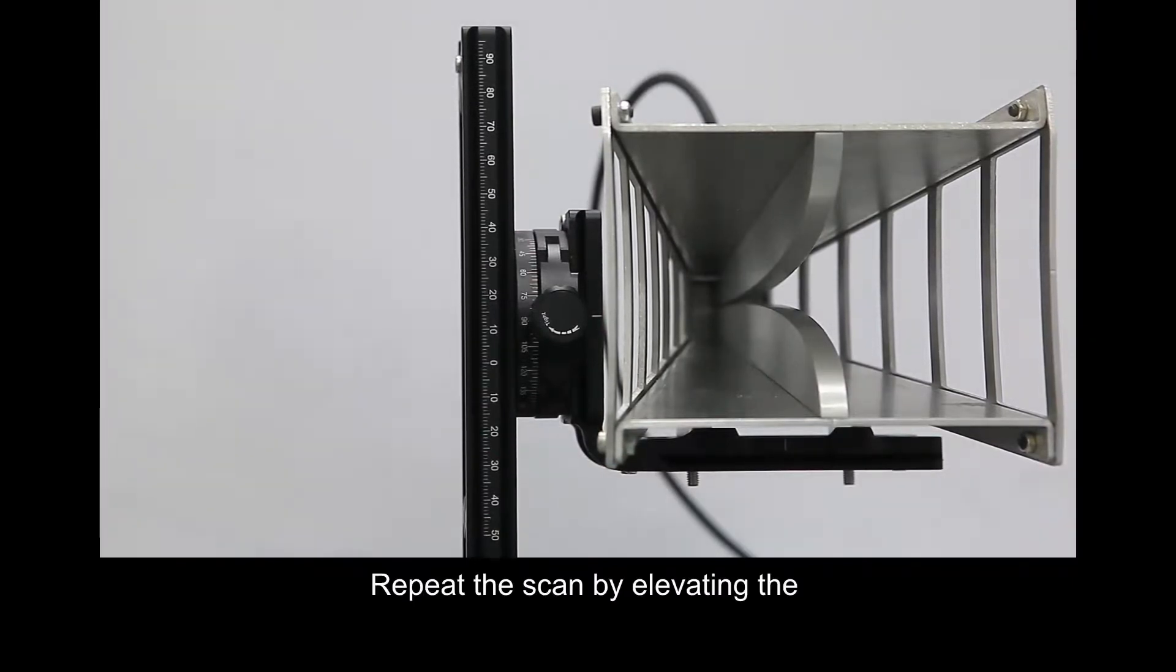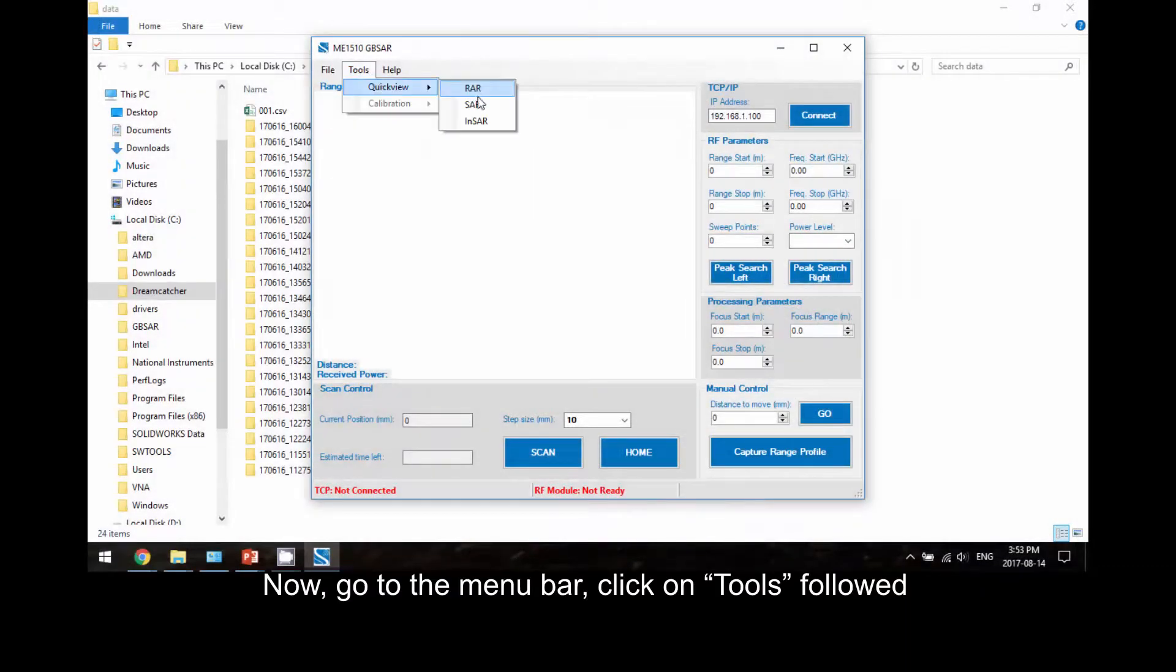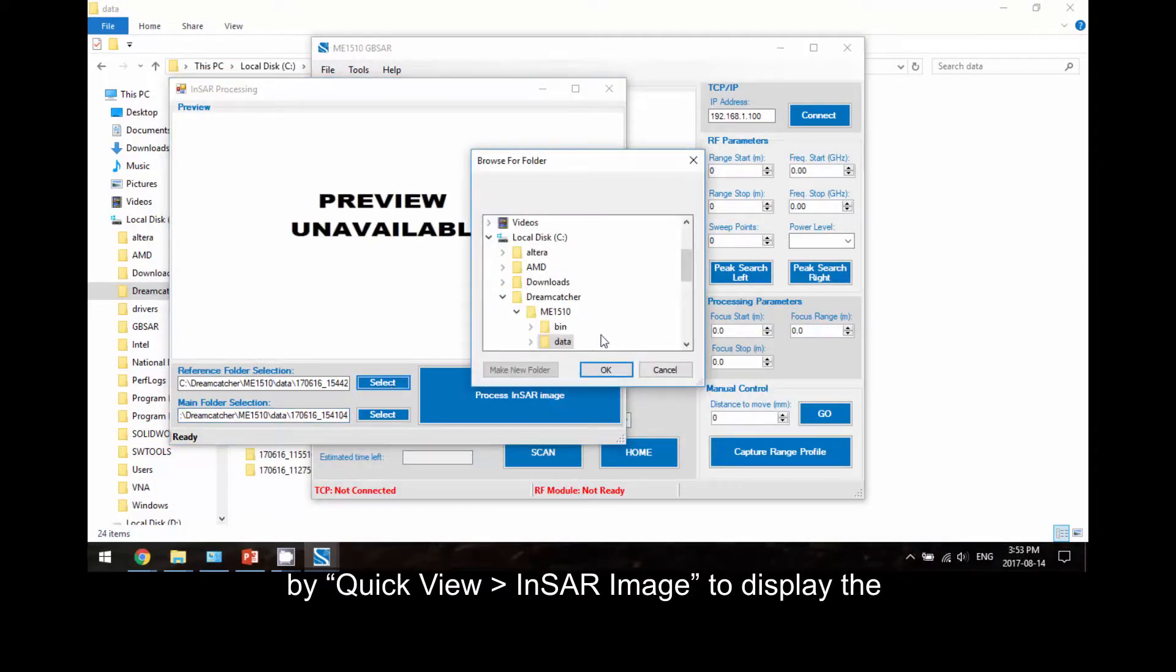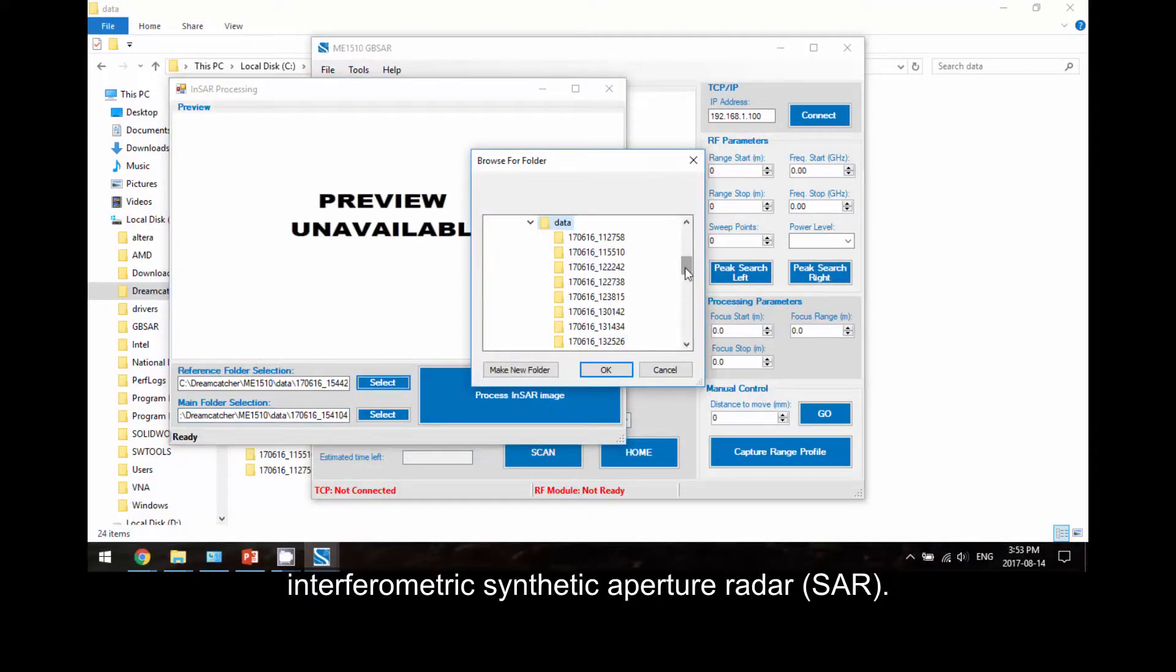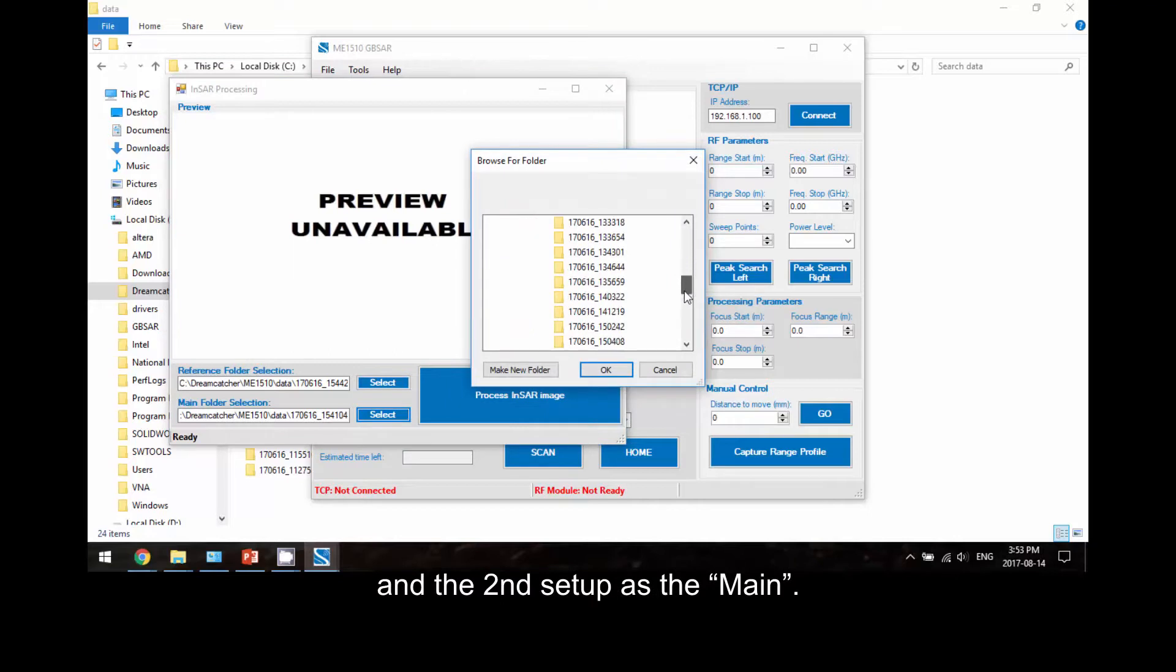Repeat the scan by elevating the position of the antenna to positive 10 millimeters. Now go to the menu bar, click on Tools followed by Quick View InSAR Image, to display the interferometric synthetic aperture radar InSAR. Select the first setup as the reference and the second setup as the main.